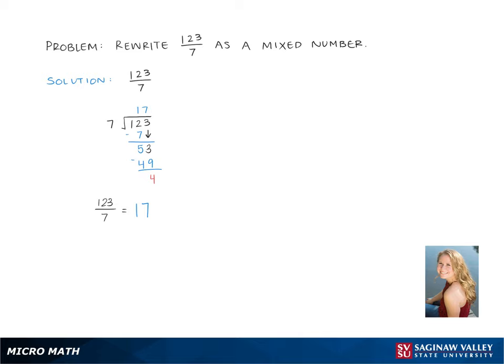Then the remainder becomes the numerator of the fraction in our mixed number, and the denominator in the mixed number is the denominator from the original fraction. So our final answer is 17 and 4 sevenths.